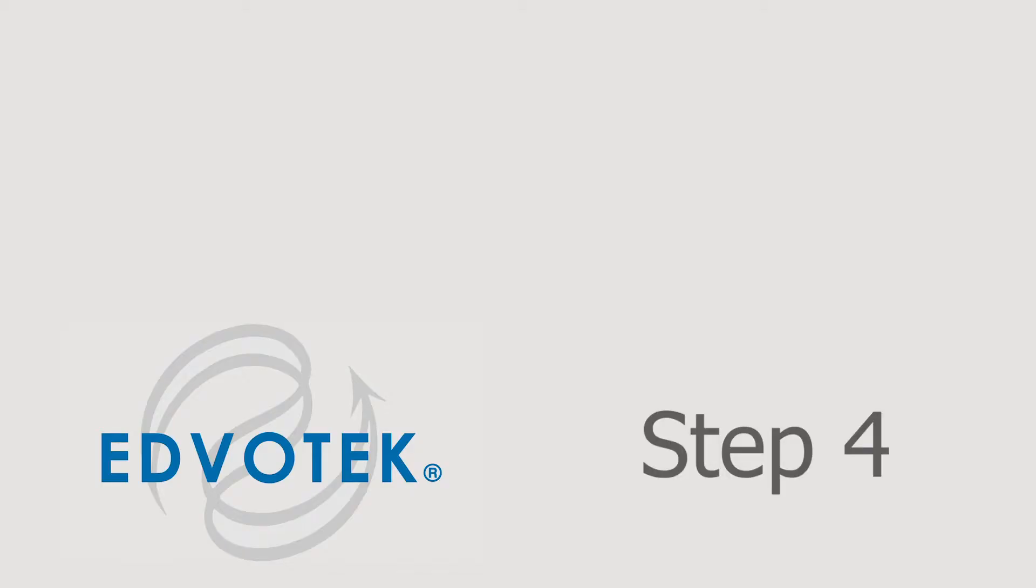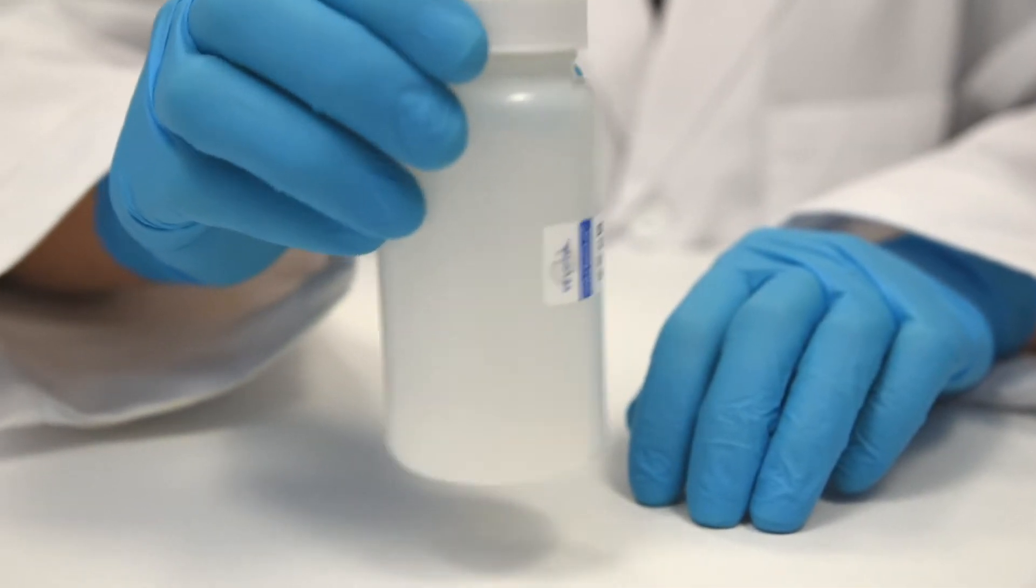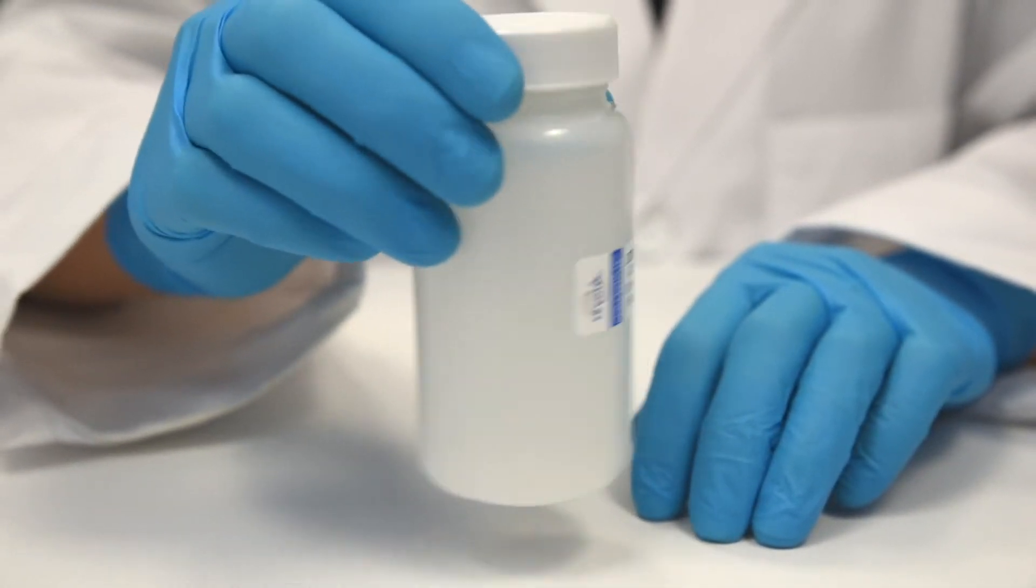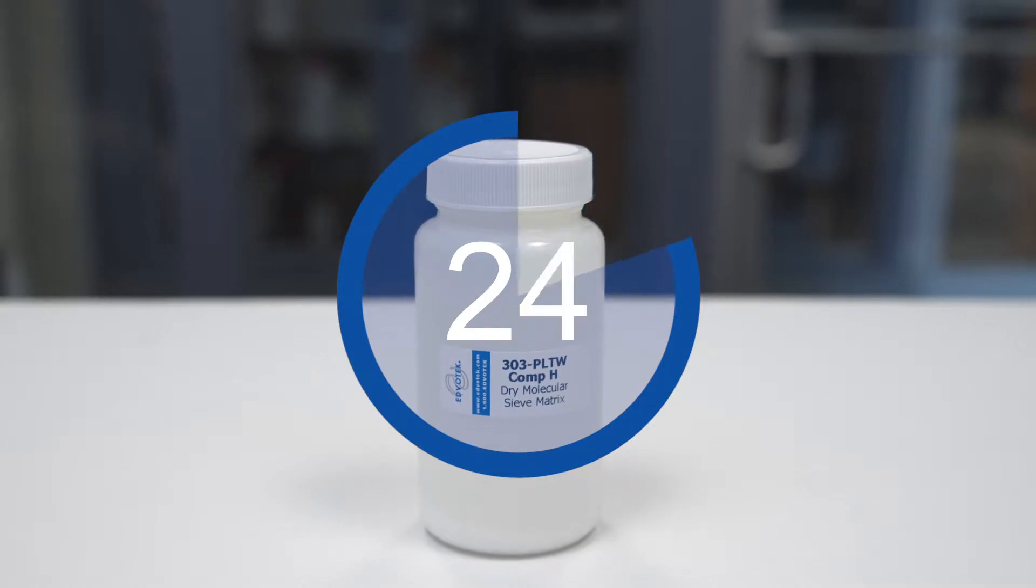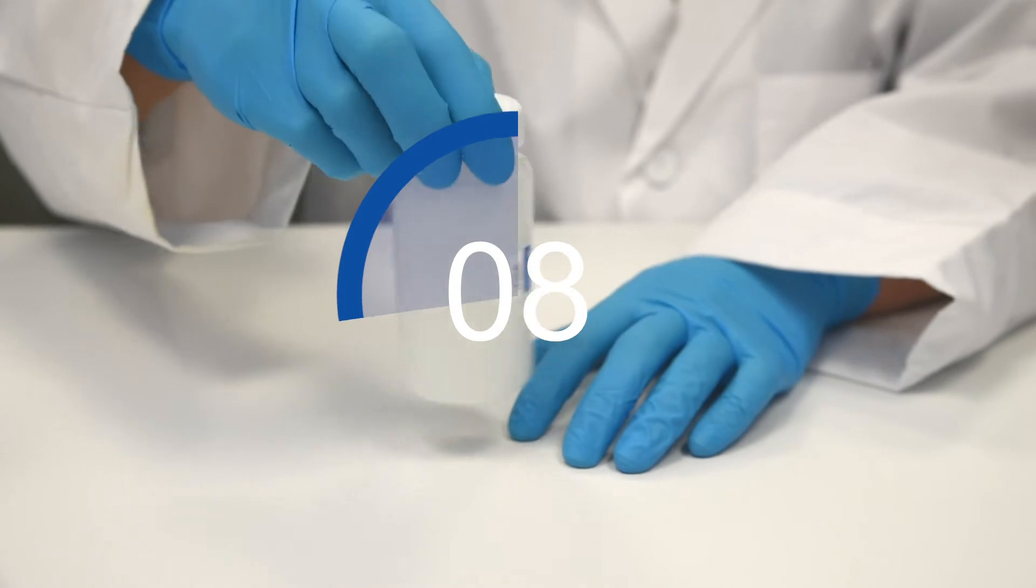Step 4: Gently swirl or stir the bottle of matrix to ensure there are no clumps. Incubate at room temperature for 30-60 minutes, stirring occasionally to fully rehydrate.